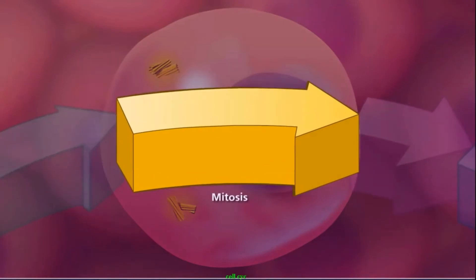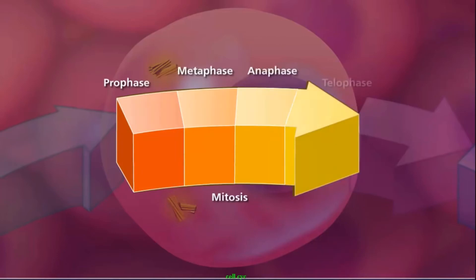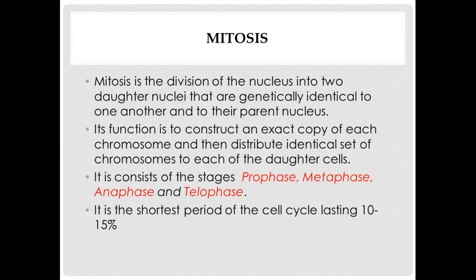Its function is to construct an exact copy of each chromosome and then distribute identical sets of chromosomes to each of the daughter cells. It consists of the stages prophase, metaphase, anaphase, and telophase. It is the shortest period of the cell cycle lasting 10 to 15 percent.